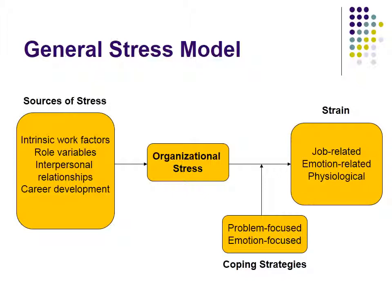After the sources of stress, we have the middle of the model — organizational stress itself: how much stress is entering one individual in the workplace from all these particular sources. The less stress, meaning the more we're in our comfort zone, the less strain we're likely to experience. Stress leads to strain when there is enough of it. The far right of the model shows strain outcomes: job-related strain, emotionally-related strain, and physiological strain.